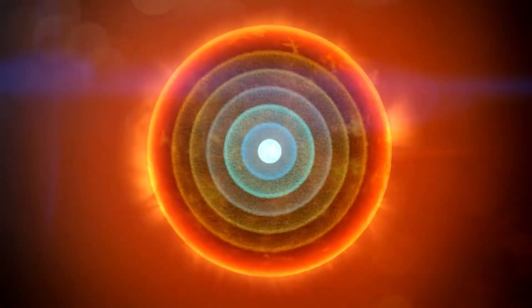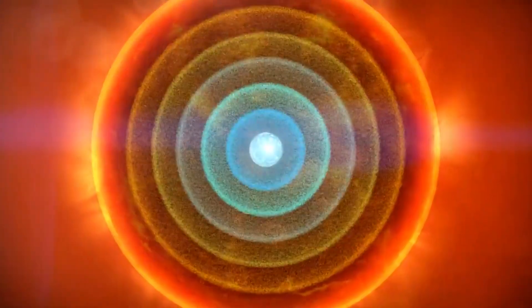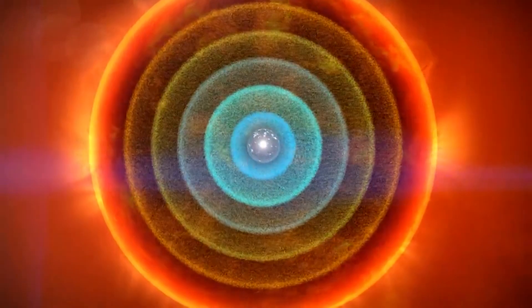Red giants are dying stars. They are luminous with low or intermediate mass in a late phase of stellar evolution.